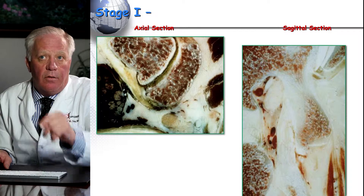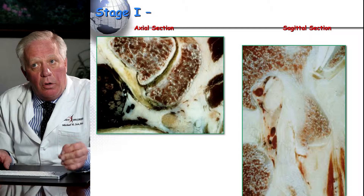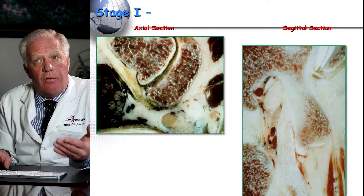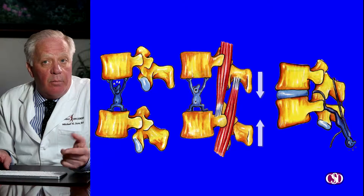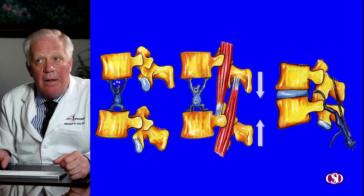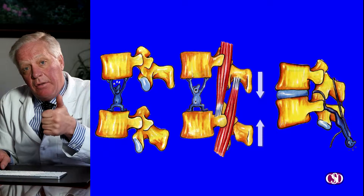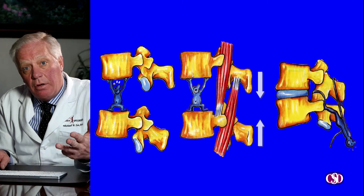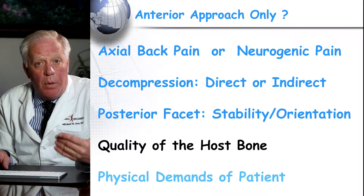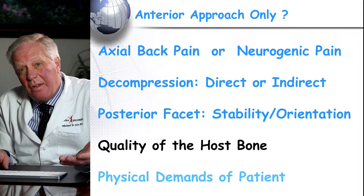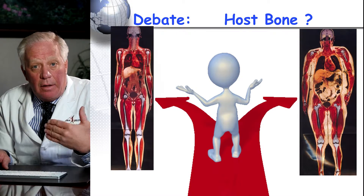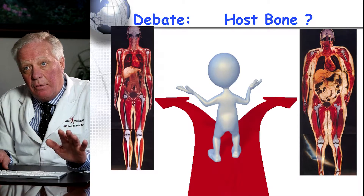Degenerative spondylolisthesis occurs in different stages. On the left is a normal-looking facet joint; on the right, the relationship of the nerve and thick ligaments represents an early stage of joint changes. The disc, facet joint, orientation, cartilage, and muscle all contribute to stability. One other key factor is bone quality — whether a patient has osteoporosis or a long-term smoking history that has changed their overall biology. Each of these factors go into the clinical decision-making process.